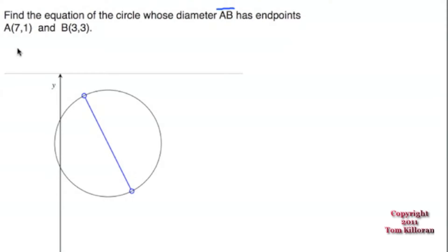Finding the equation of a circle given a diameter. Here we have finding the equation of a circle whose diameter, line segment AB, has endpoints at A(7,1) and B(3,3).